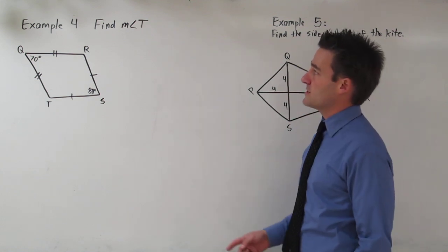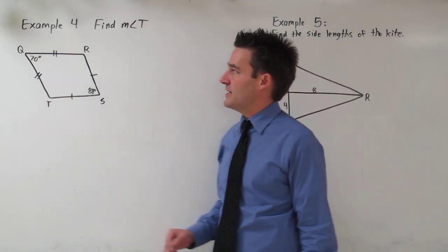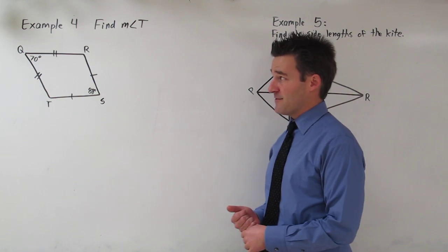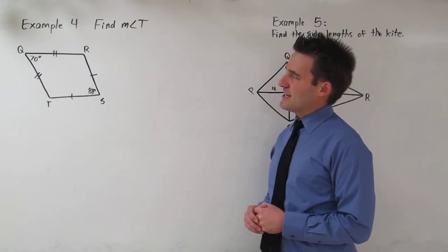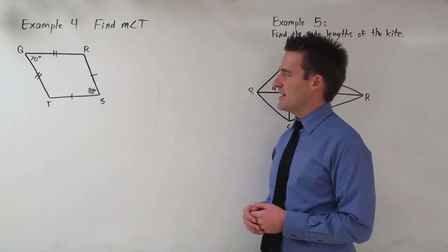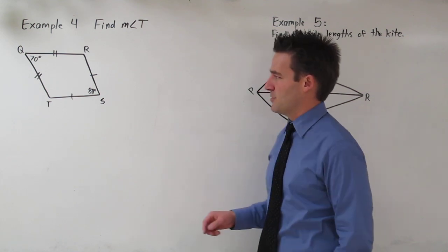In the first example, our goal is to find the measurement of angle t. Let's talk about some properties of kites. Kites have consecutive congruent sides. They have two pairs of consecutive congruent sides.